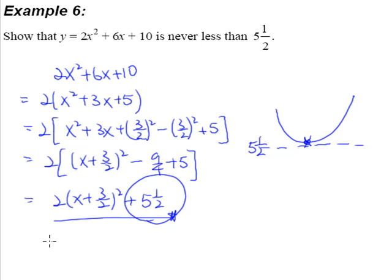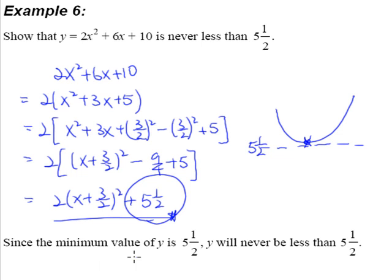How are you going to present your answer? Well, you present your answer this way. You say that since the minimum value of y is 5.5, y will never be less than 5.5. So this is how you use complete the square method to show minimum value or maximum value that a quadratic curve can ever take.